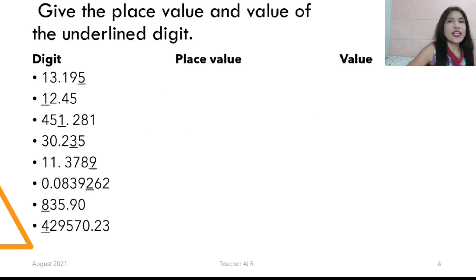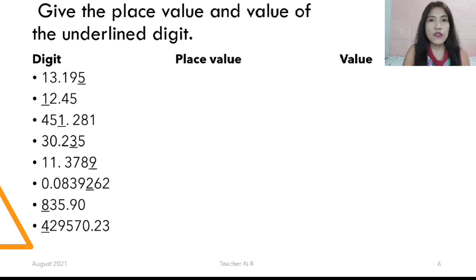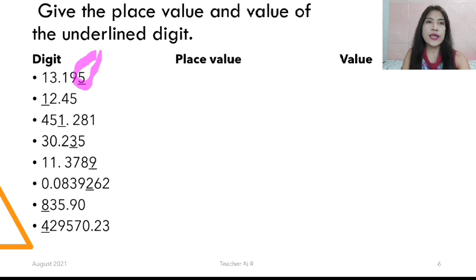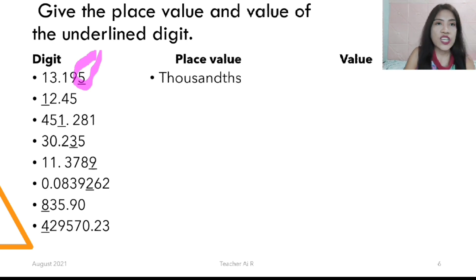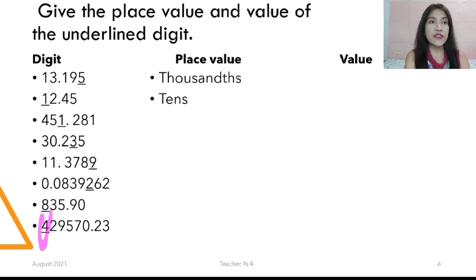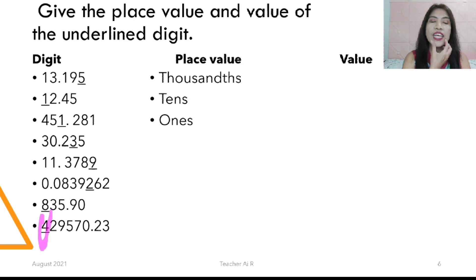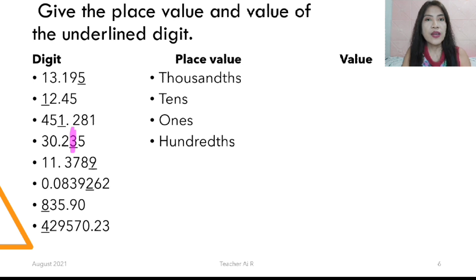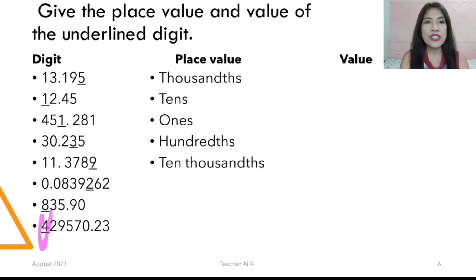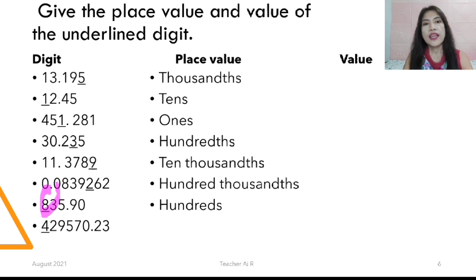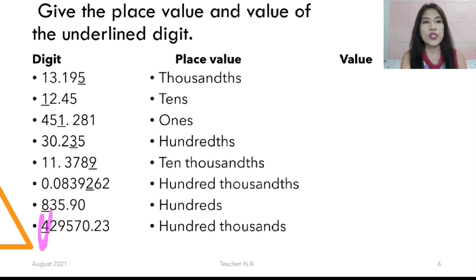Let's have this drill: give the place value and the value of the underlined digit. So we have the following: the place value of 5 there is ten-millionths. The place value of 1 is tens. The place value of 1 is ones. The place value for the next digit 3 — the value of 1 is hundreds. Next is 9 — the place value is ten-thousandths. Next is 2 — the place value is hundred-thousandths. Next is 8 — the place value is hundred-thousandths, and the place value is also hundred-thousands.